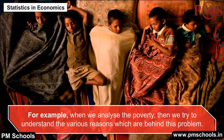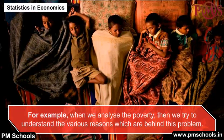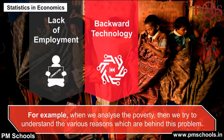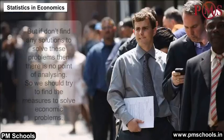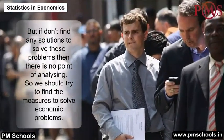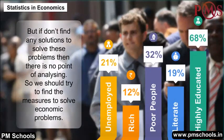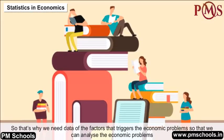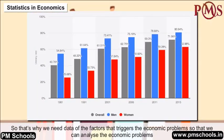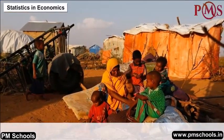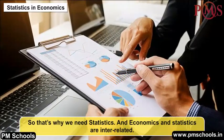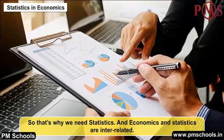For example, when we analyze poverty, we try to understand the various reasons behind the problem — like lack of employment, backward technology, or low productivity. But if we don't find solutions to solve these problems, there is no point in analyzing. So we must find measures to solve economic problems. These measures are called policies. That is why we need data on the factors that trigger economic problems, so we can analyze them and frame policies to find solutions. Economics and statistics are therefore interrelated.